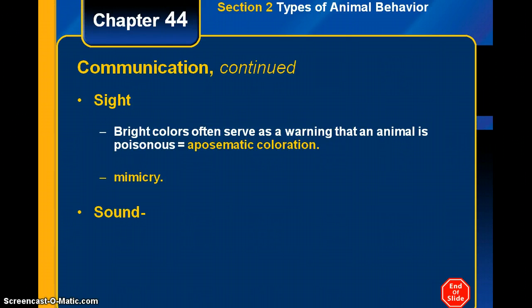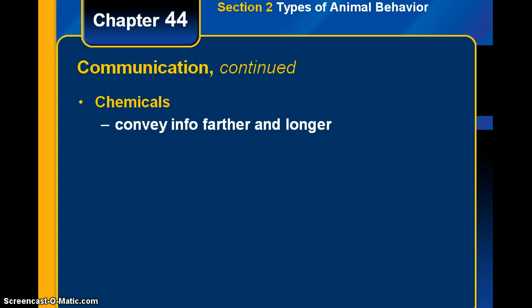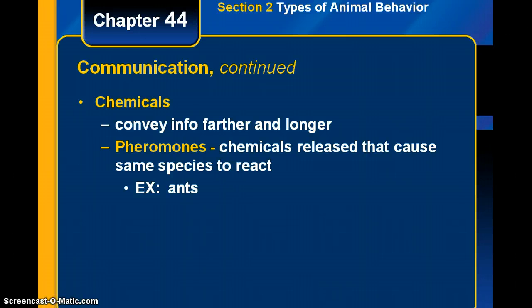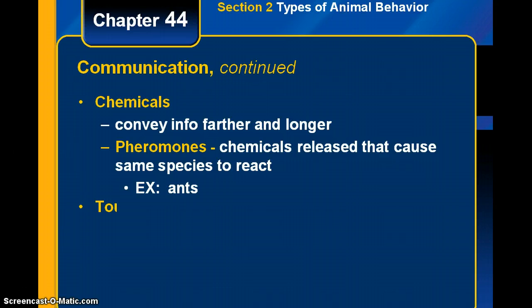Sound is another form of communication — animals make different noises. Animals can also use chemicals, which are helpful because they can convey information farther and longer than sound or sight. Pheromones are specific chemicals released that cause the same species to react — to attract mates, or like ants do, to leave warning signals or trail markers leading to a food source.